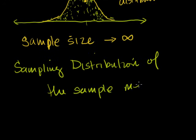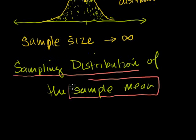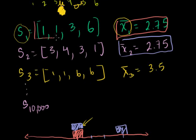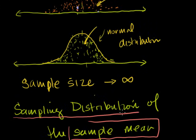Let's dissect this so that this long description starts to make sense. When we say it's the sampling distribution, that tells us it's the distribution of some statistic — in this case the sample mean — derived from samples of an original distribution. I could have used the mode, range, or other statistics, but the sampling distribution of the sample mean is the most common one and the best place to start learning about the central limit theorem.